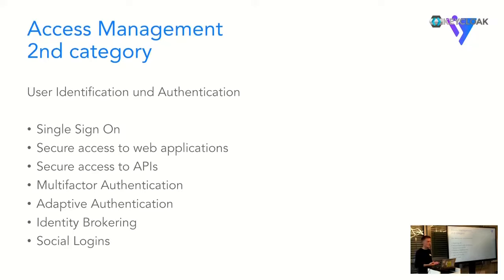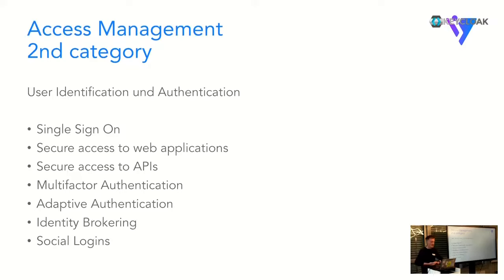We also need to secure access to APIs, which is again authentication and authorization. There's multi-factor authentication, where Keycloak provides good out-of-the-box standards with TOTP. You might find use cases where push-based multi-factor authentication is a better approach, and there are plugins for external service providers available which you can just add to your Keycloak.